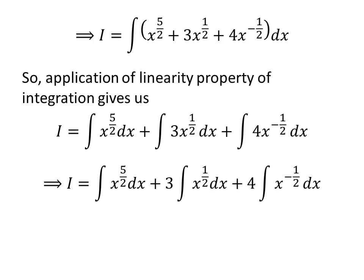After taking out the constant, we get I is equal to integral of x raised to the power of 5 upon 2 with respect to x, plus 3 times integral of x raised to the power of half with respect to x, plus 4 times integral of x raised to the power of minus half with respect to x.